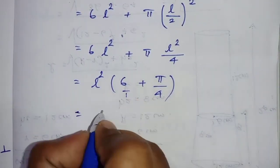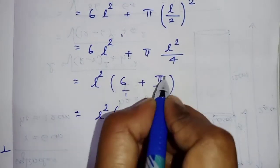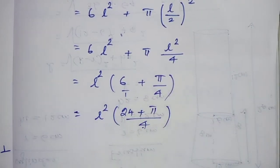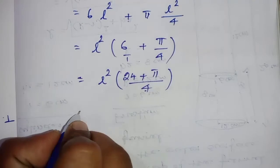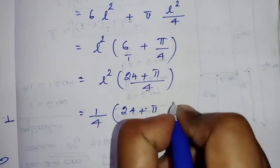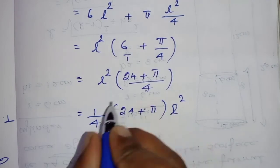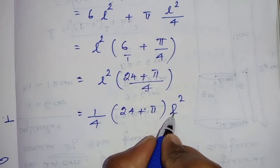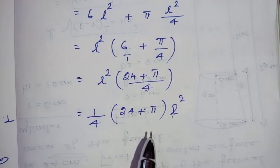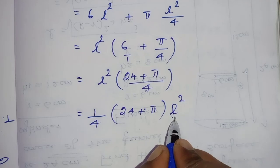Taking L² as common and cross-multiplying with denominator 4: L² times (24/4 + π/4), which gives 1/4 times (24 + π) times L². Therefore, the total surface area of the remaining solid is 1/4 times (24 + 5π) times L² square units.